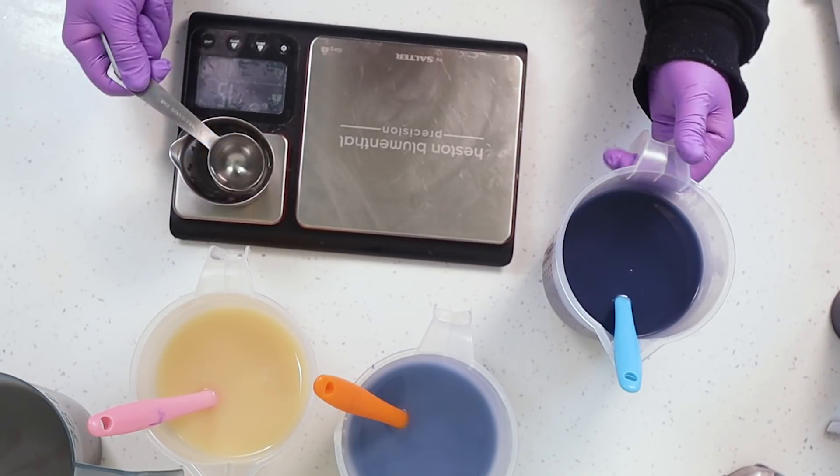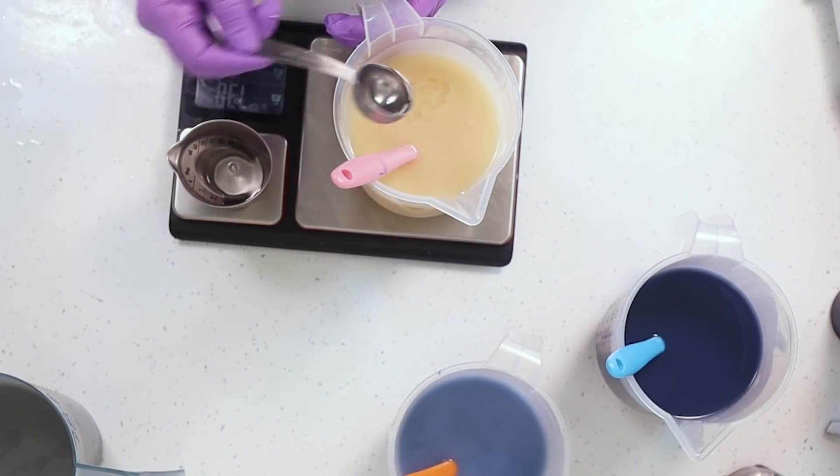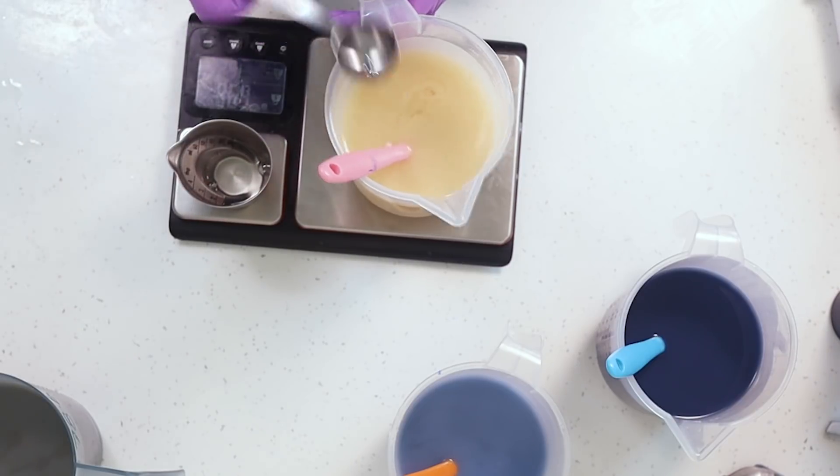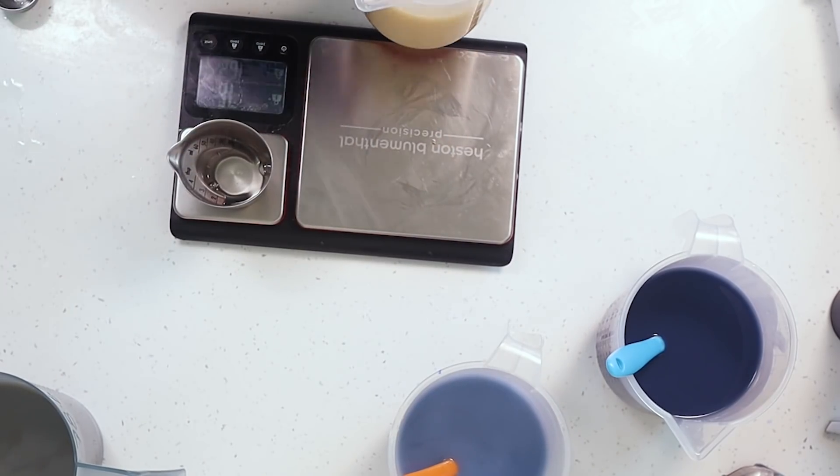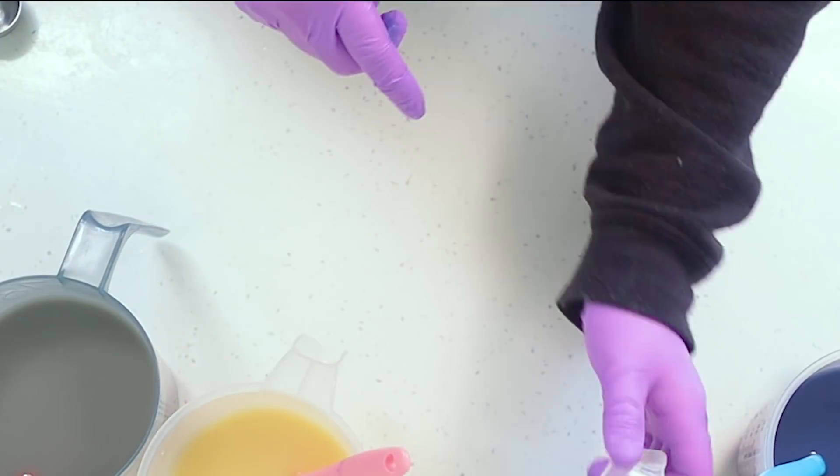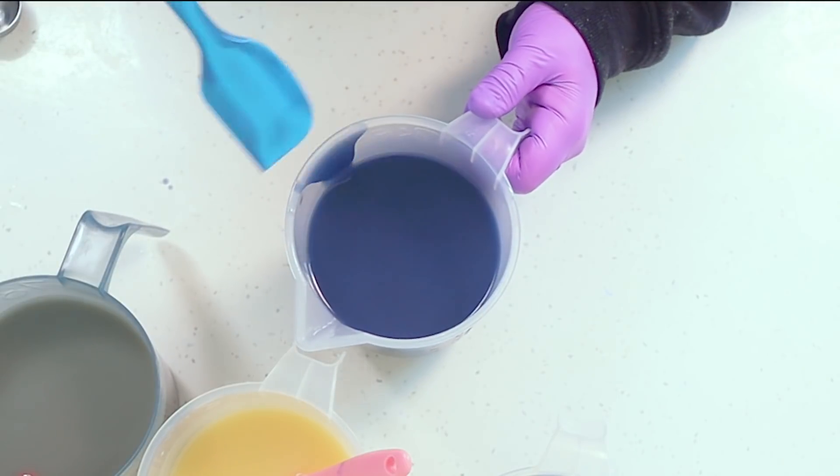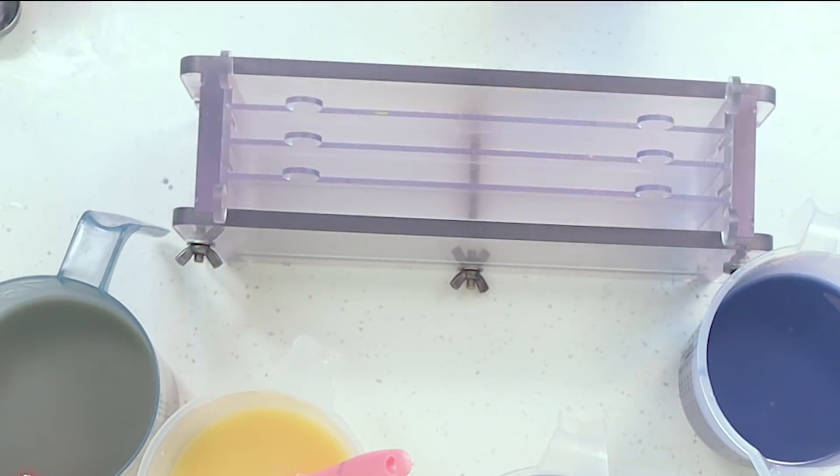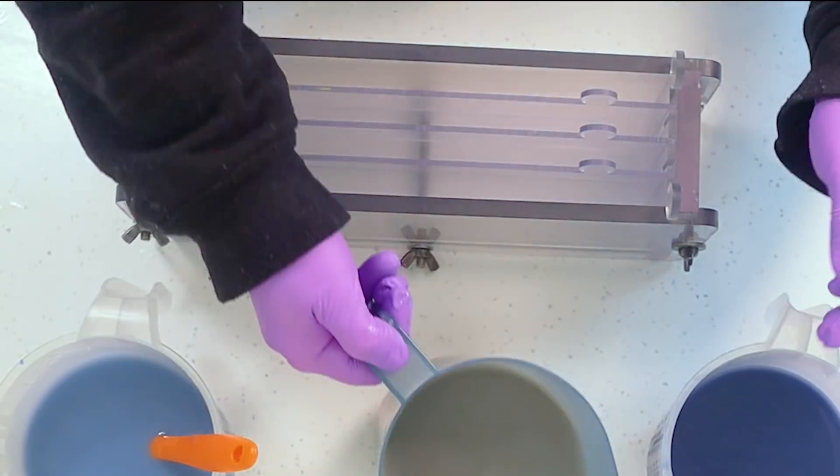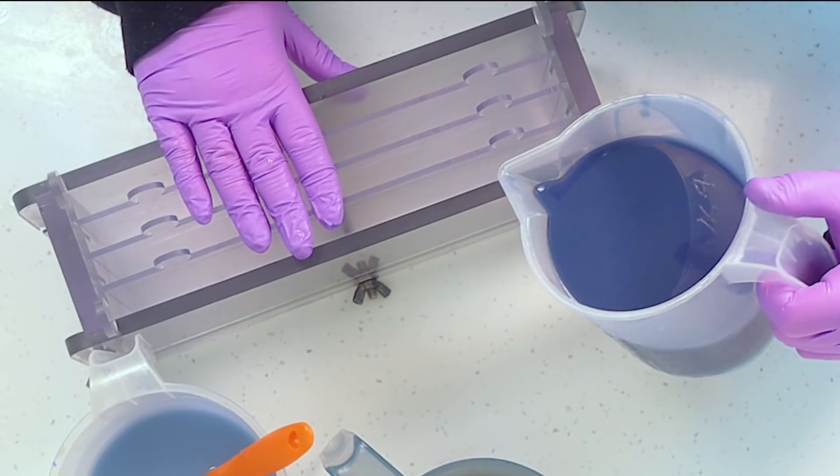So just pop in that essential oil. These are even amounts of batter so I'm just going to evenly divide it between the four batters. And then I'll just give everything a final stir round and what I'm doing at this point is just checking that everything's properly emulsified and I'm looking for that start of a light trace. If I'm not there yet then I will just let the batter sit and wait till it gets to that stage. I won't stick blend it anymore.